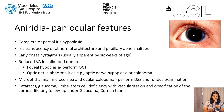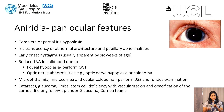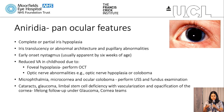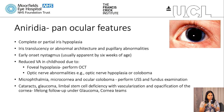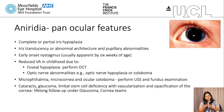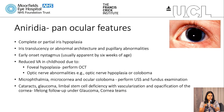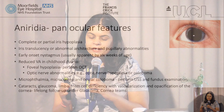Patients can have optic nerve abnormalities, optic nerve hypoplasia, and coloboma. Some patients can also present with microphthalmia, microcornea, and oculocular coloboma. It's important that we undertake ultrasound to measure the axial length and undertake a good fundal examination looking for any chorioretinal or optic disc colobomas. Patients then go on slightly later in life to develop cataracts, glaucoma, limbal stem cell deficiency with vascularization and opacification of the cornea — aniridia-related keratopathy. It's important for aniridia patients to have lifelong follow-up under the glaucoma and/or cornea teams.